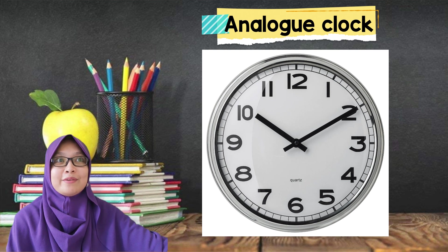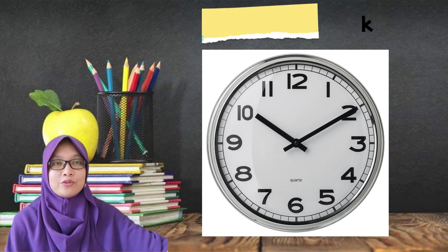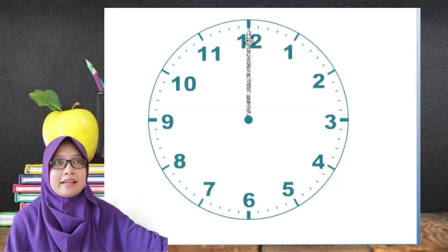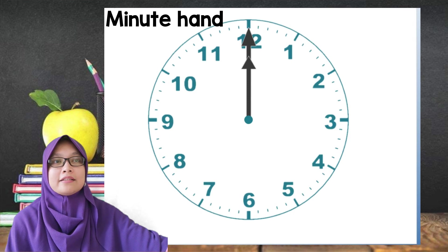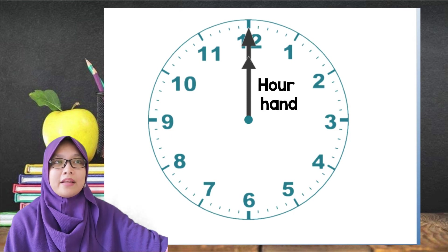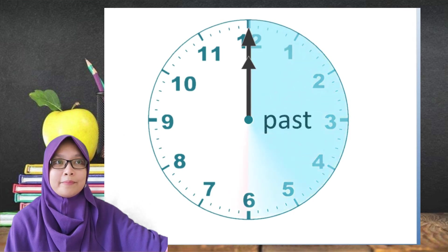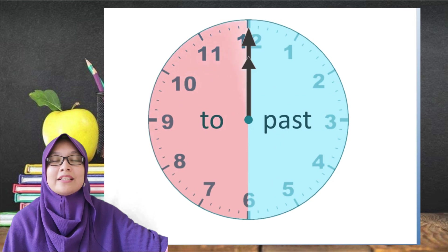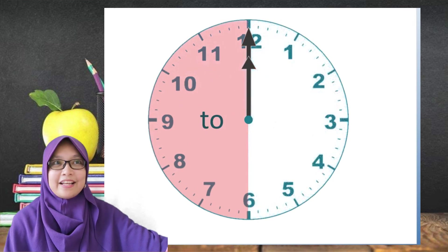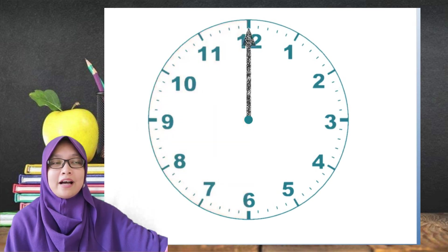Today, we will be looking at the intervals of 5 minutes past and to the hour. This hand is a minute hand and this short hand is the hour hand. The first half of the clock is the minutes past the hour and the second half of the clock is the minutes to the next hour. In this lesson, we will be looking at 5 minutes past and to the hour.